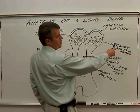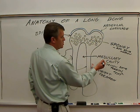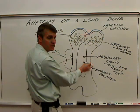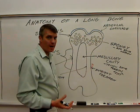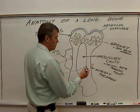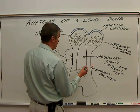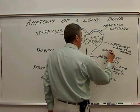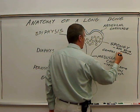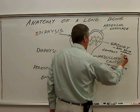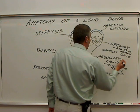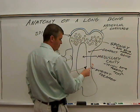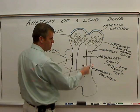Compact bone — I should have talked about that when I talked about spongy bone. This area here, especially along the diaphysis of a long bone, is compact bone, right along the outer wall. Compact bone runs all along the inside of the diaphysis.